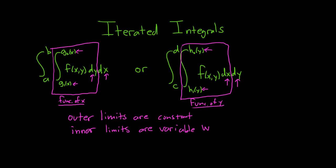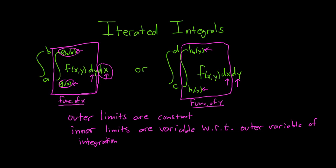The inner limits are variable with respect to the outer variable of integration. Everything makes sense — when reading integrals, you just have to make sure things make sense. The limits here are functions of x, so the inner integral is a function of x and we integrate at the end with respect to x. Similarly, the other box is a function of y because the limits are functions of y, and at the end we integrate out the y and get a number.